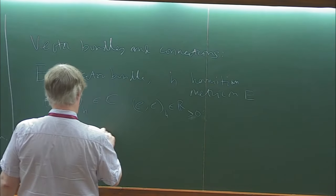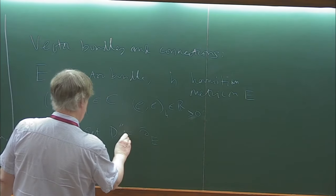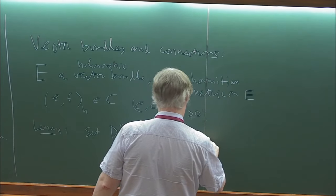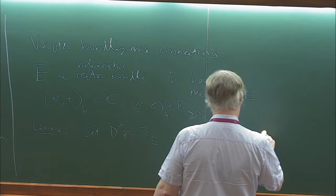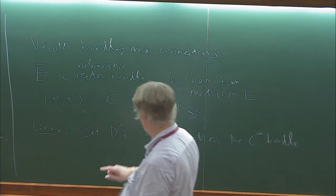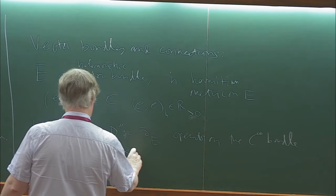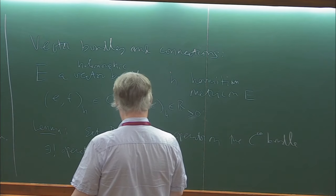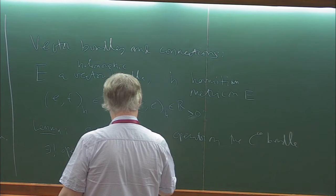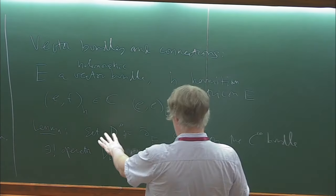Let d-double-prime denote the d-bar operator of E. This is an operator on the C-infinity bundle. One way to have a holomorphic structure for a bundle is to have a C-infinity bundle plus a d-bar operator. The lemma states that there exists a unique operator d-prime-h going from C-infinity sections of E to (1,0)-forms, while d-double-prime goes to (0,1)-forms.